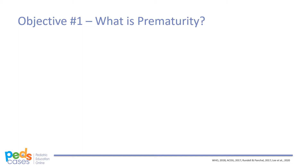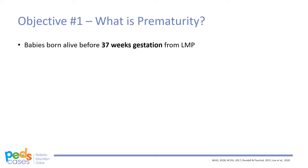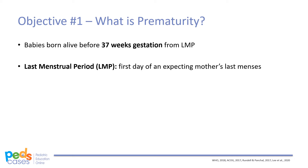Historically, prematurity was defined as a birth weight lower than 2,500 grams. However, it is now defined by the World Health Organization as babies born alive before 37 weeks gestation from the last menstrual period, or LMP. The LMP refers to the first date of an expected mother's last menses. It can be used to calculate the estimated due date using Nagle's rule, which is the LMP plus 7 days minus 3 months.